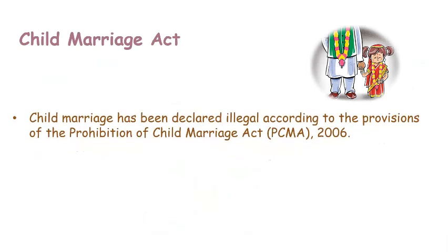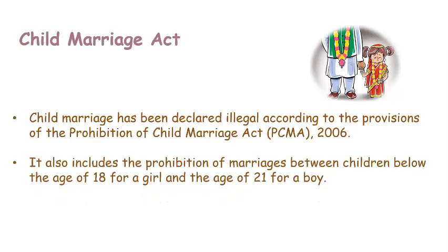Child marriage has been declared illegal according to the provisions of the Prohibition of Child Marriage Act. It prohibits marriages of children below the age of 18 for a girl and below the age of 21 for a boy. So a boy's marriage cannot be done below the age of 21, and a girl's marriage cannot be done below the age of 18.